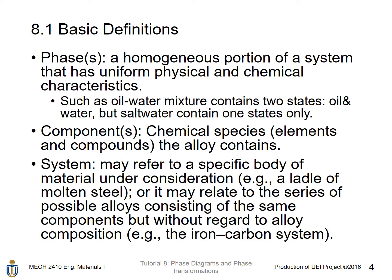Some basic definitions: Phases is a homogeneous portion of a system that has uniform physical and chemical characteristics. For example, an oil-water mixture contains two phases — the oil phase and the water phase — because oil cannot dissolve into water. However, for salt water, there is only one phase, that is salt water itself, because salt can dissolve into water.